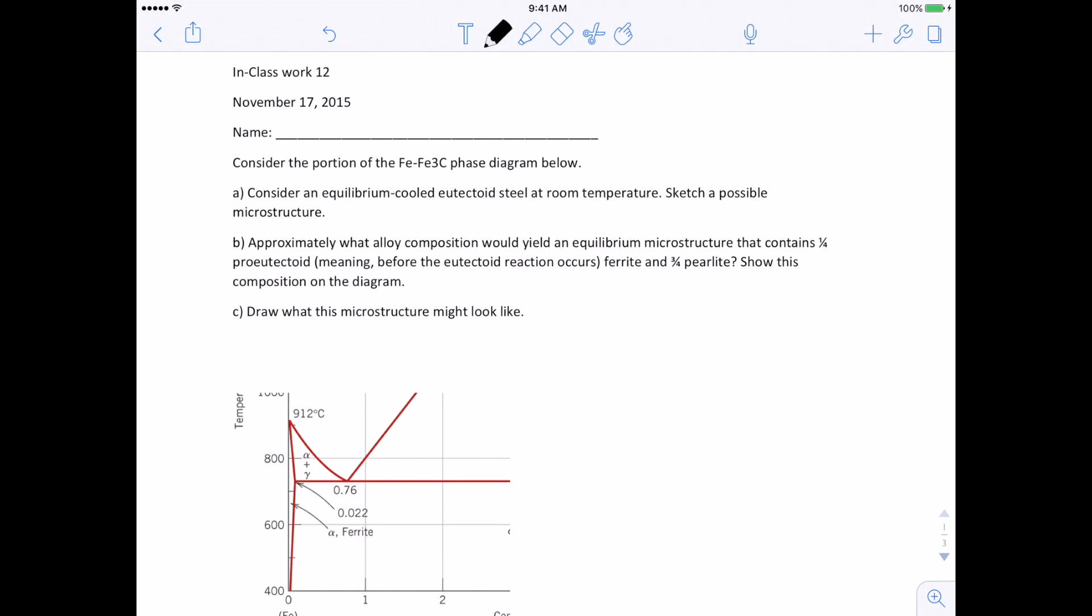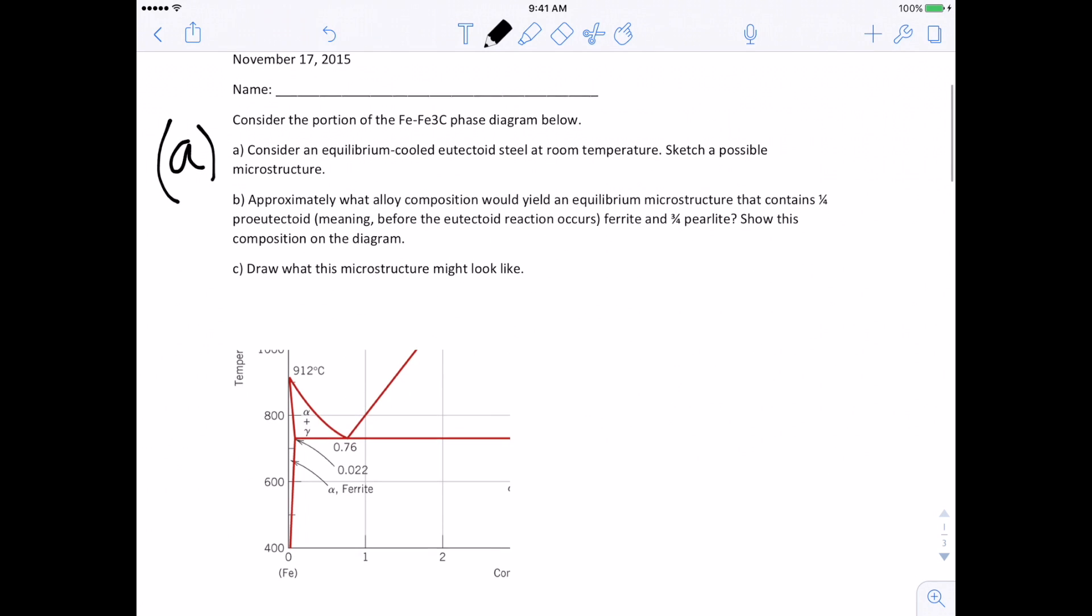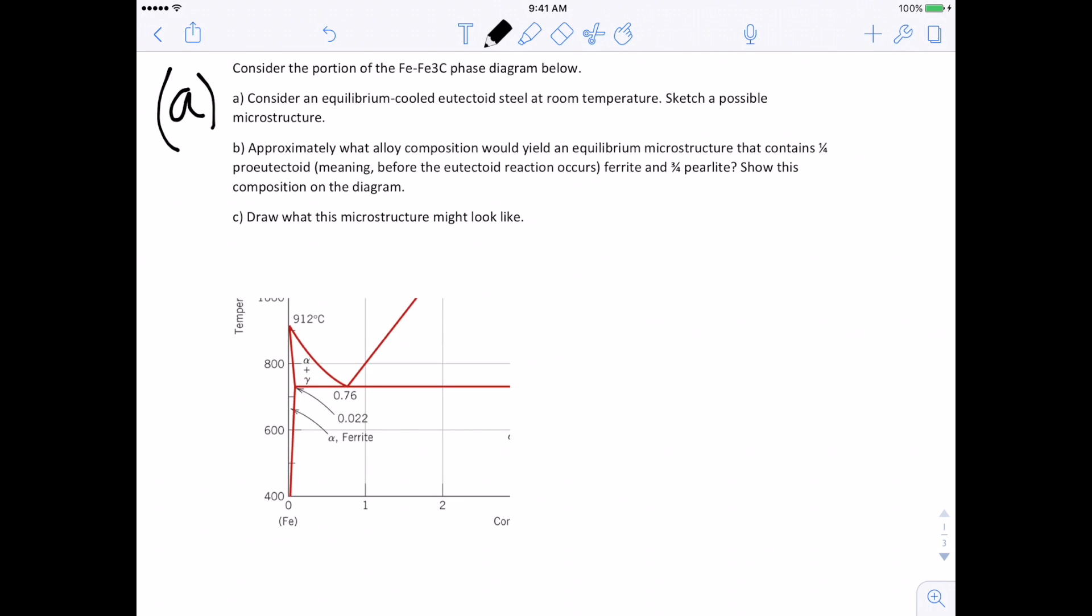This is a solution to in-class work 12 and I'm focusing in this first segment on Part A. In Part A we are looking at this iron Fe3C phase diagram and we are working at sketching a possible microstructure.